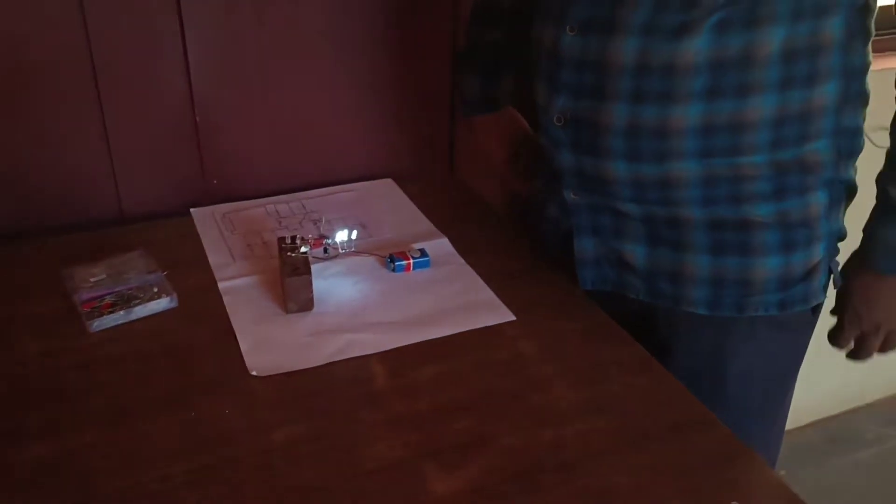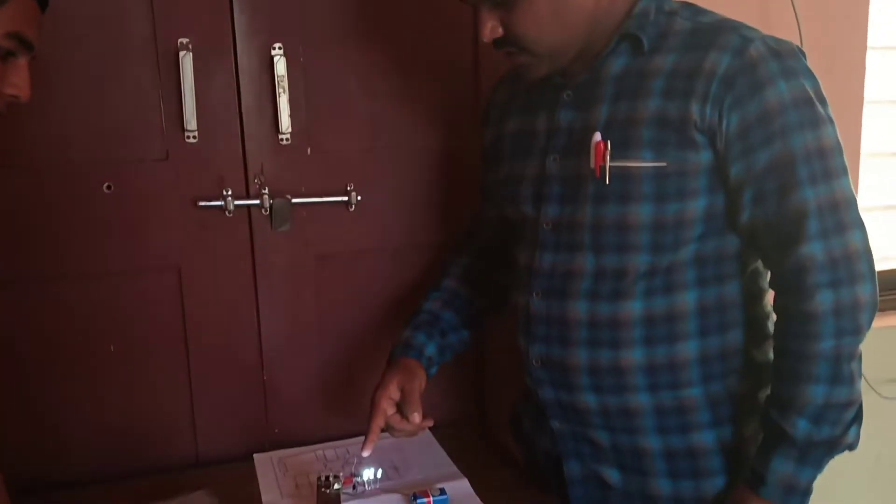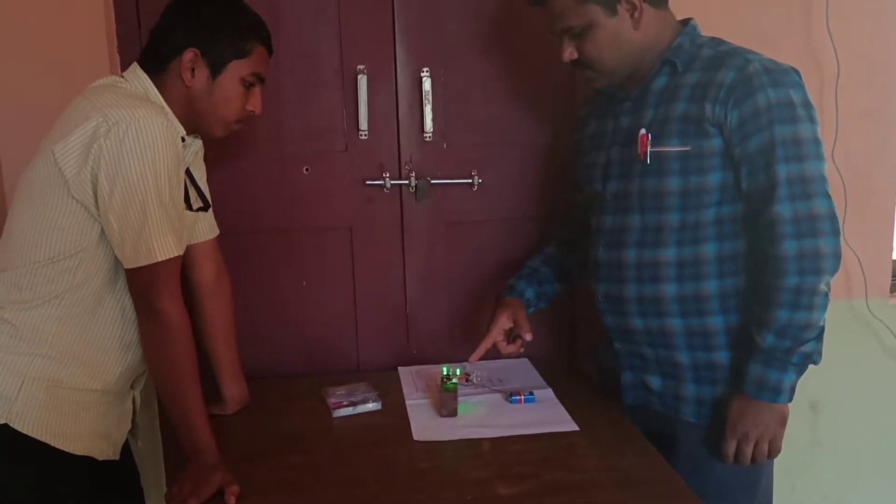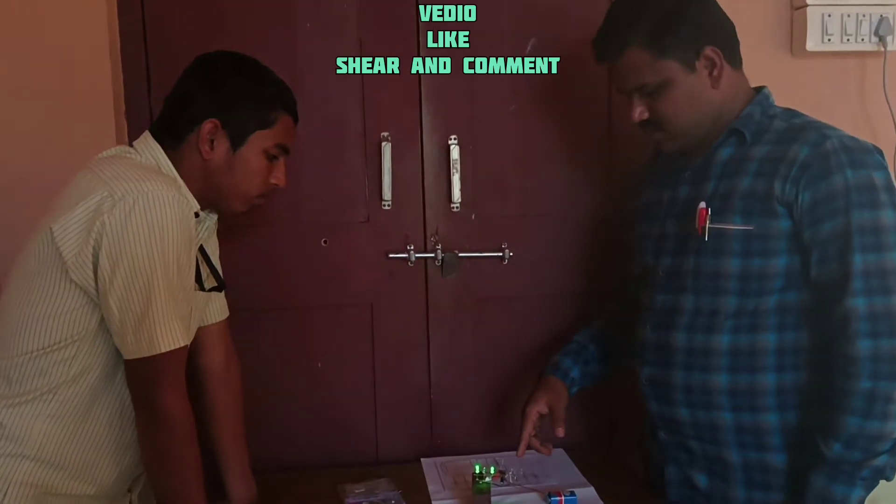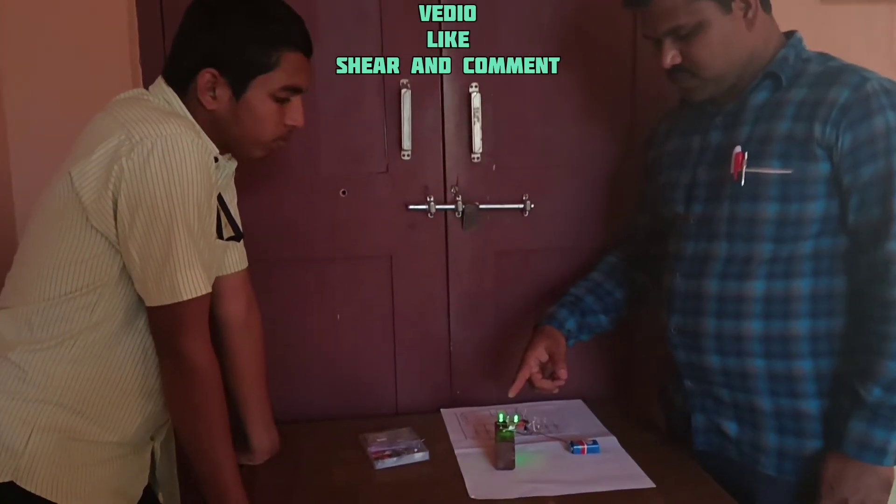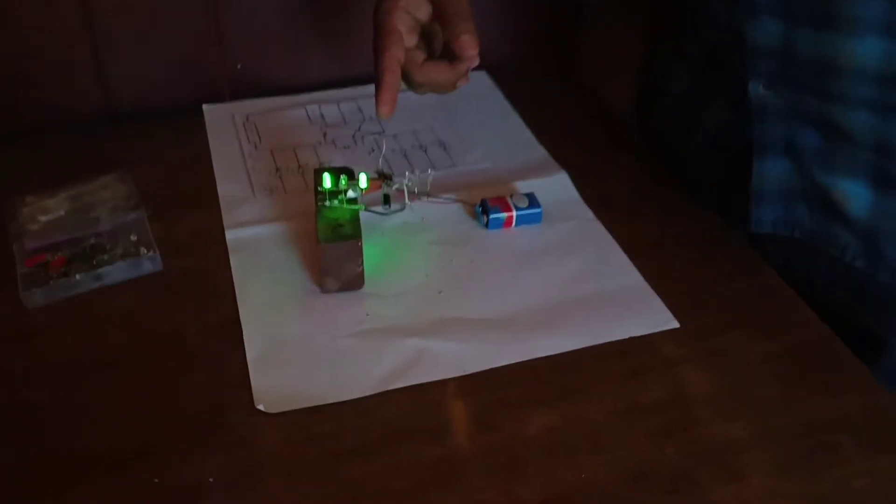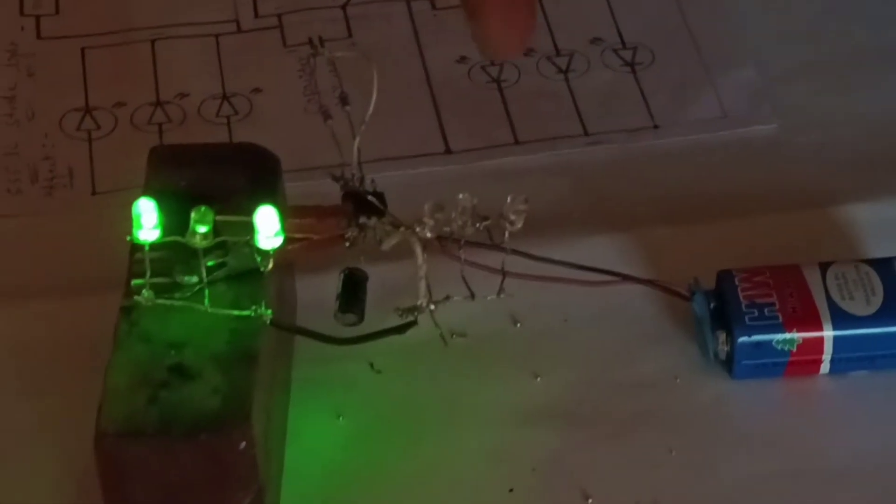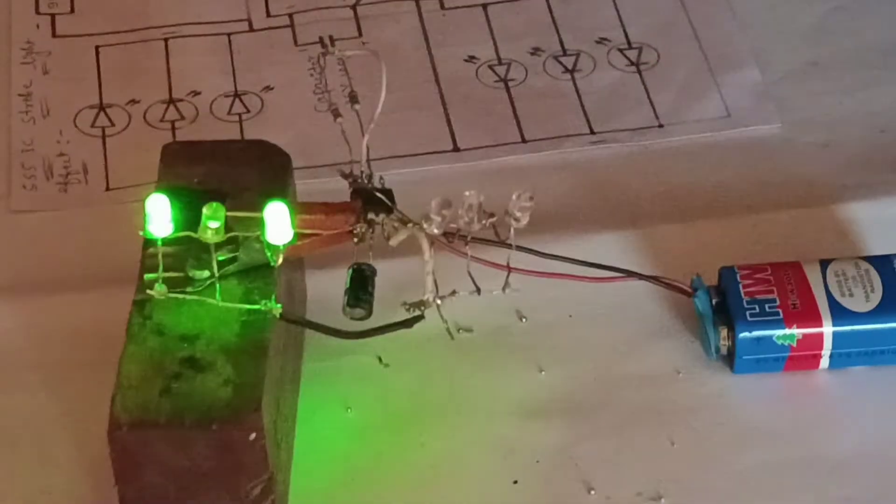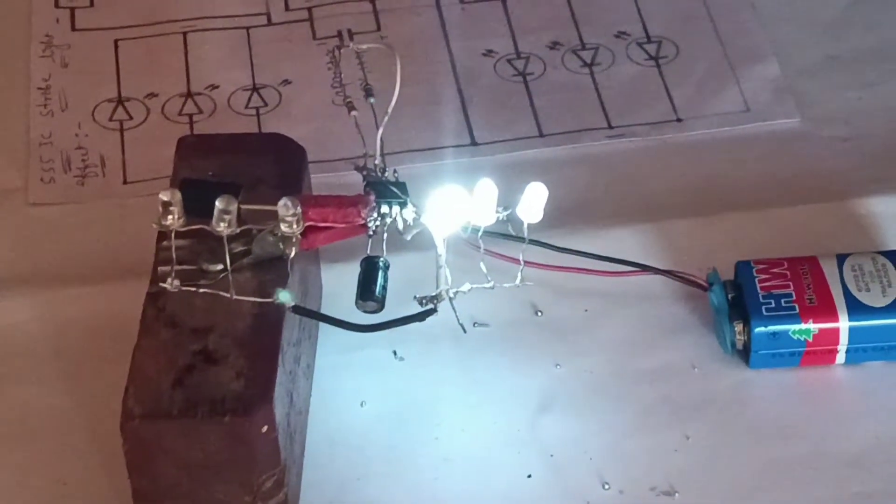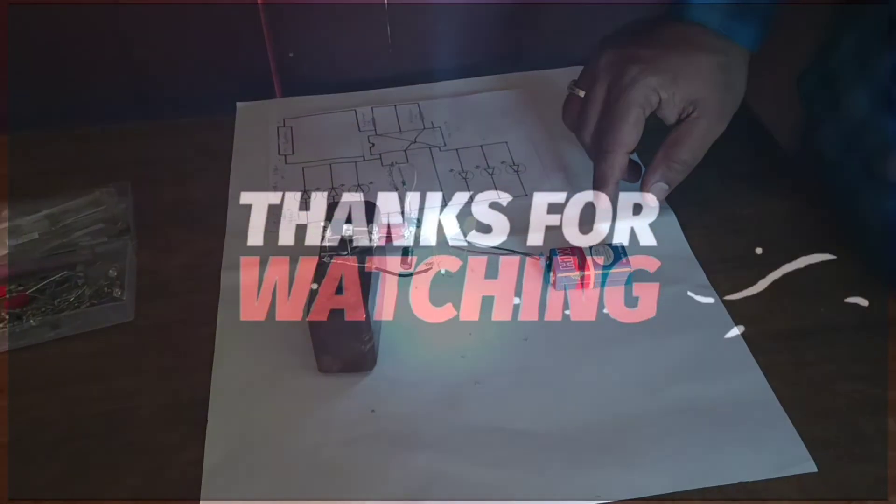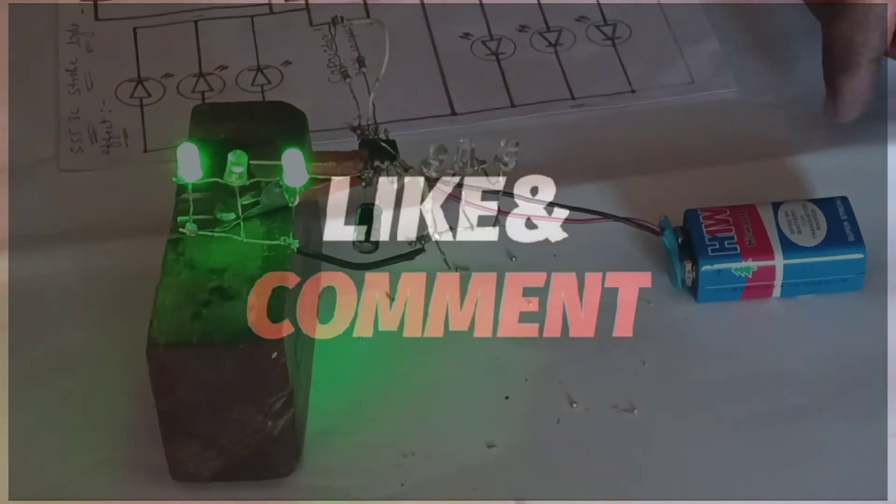Now the circuit is completed. See the strobe light effect using the 555 IC. This is a timer IC, changing the LEDs from time to time. Once this group lights up, then the other group—continuously strobing. This is the strobe light effect using the 555 timer IC.